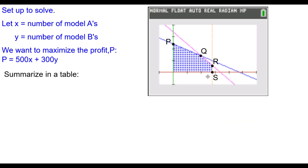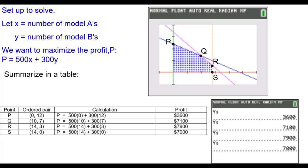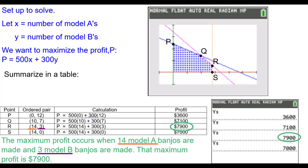We'll summarize this in a table, labeling these points. These are the profits that we get. And this is our solution.